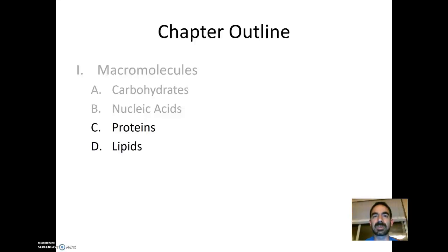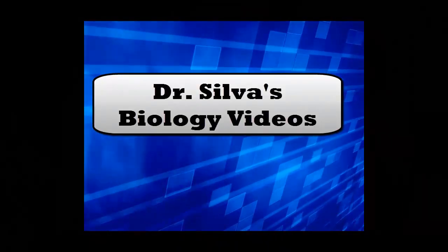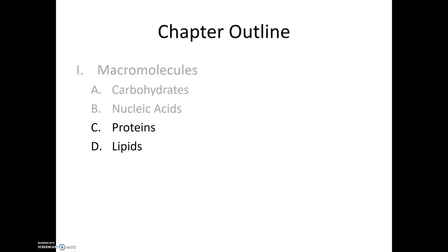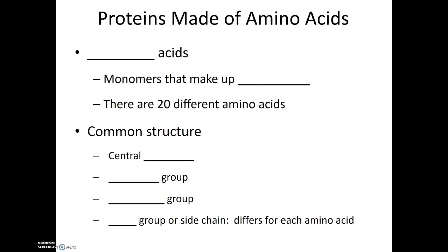In this video, we're going to talk a bit about proteins, their functions, and their structure. The next type of macromolecules that we'll talk about are the proteins. Proteins are made up of amino acids, so they are the monomers for the proteins.